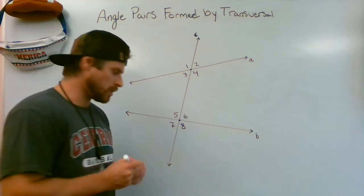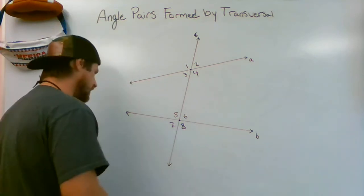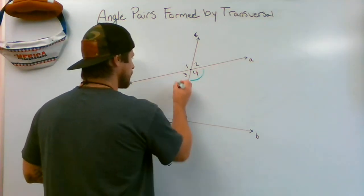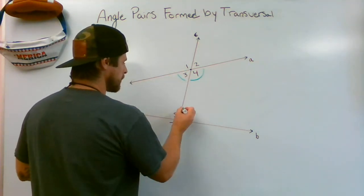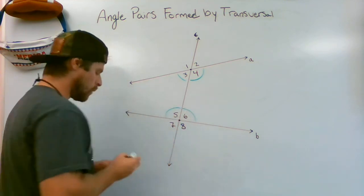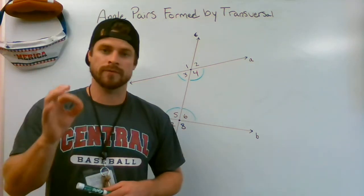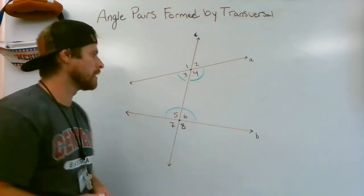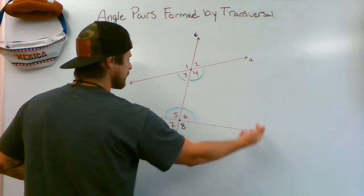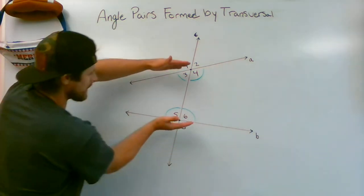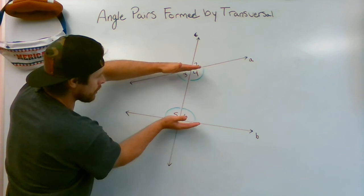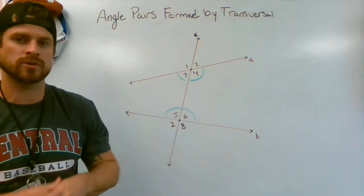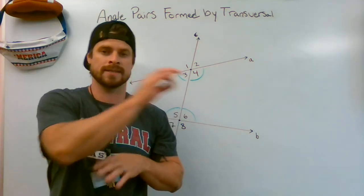One thing I want you to notice right away — I'm going to be using a lot of colors today. In green I'm going to mark angles three, four, five, and six. One thing you should notice about all of those angles is that they are in the interior of lines A and B — they're on the inside. So those are interior angles. Interior means inside.